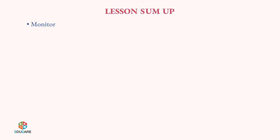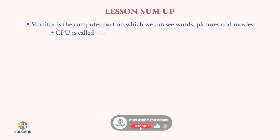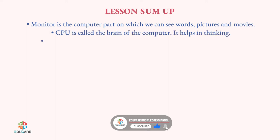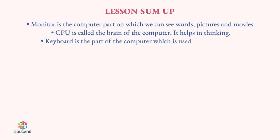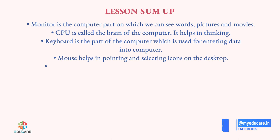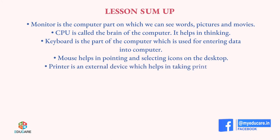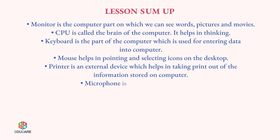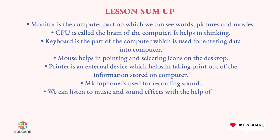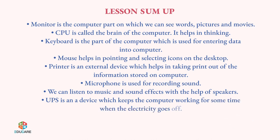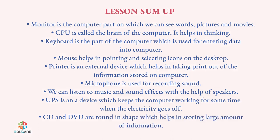Lesson Sum Up. Monitor is the computer part on which we can see words, pictures and movies. CPU is called the brain of the computer — it helps in thinking. Keyboard is the part of the computer which is used for entering data into the computer. Mouse helps in pointing and selecting icons on the desktop. Printer is an external device which helps in taking printout of information stored on the computer. Microphone is used for recording sound. We can listen to music and sound effects with the help of speakers. UPS is a device which keeps the computer working for some time when the electricity goes off. CD and DVD are round in shape and help in storing a large amount of information.